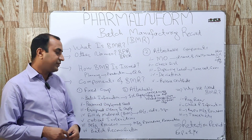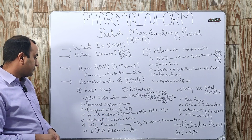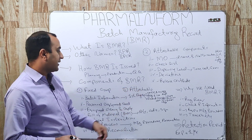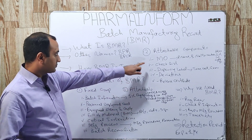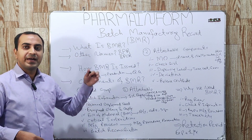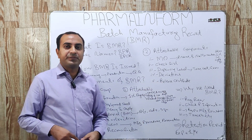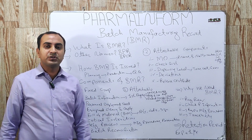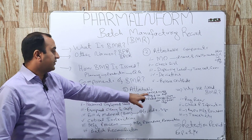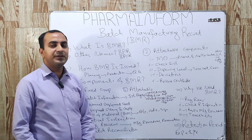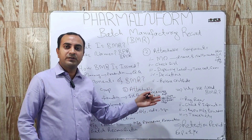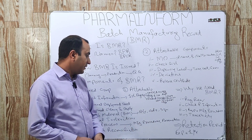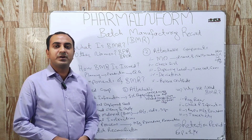The first fixed component is batch information. Usually the first page of the BMR contains batch information. It includes name, batch number, batch size, manufacturing date, expiry date, registration number, and product description — like dosage form, its dimension, shape, shelf life, and color.